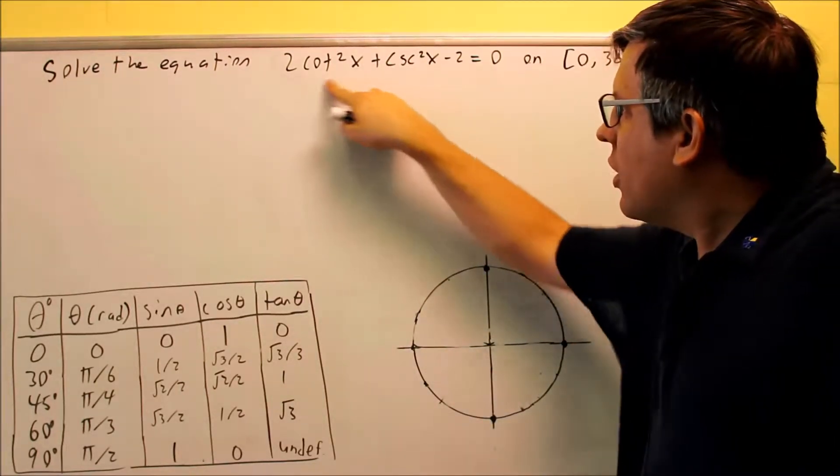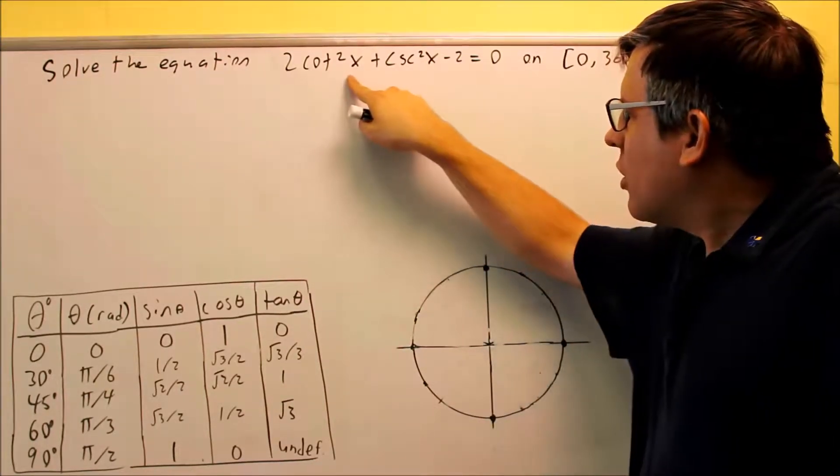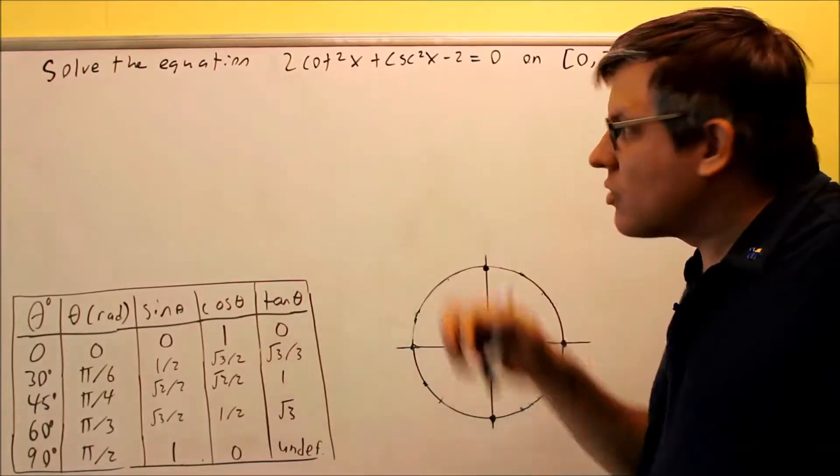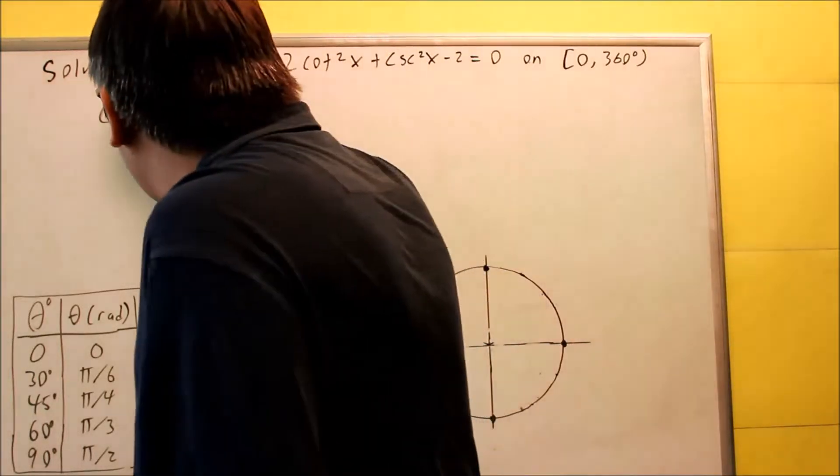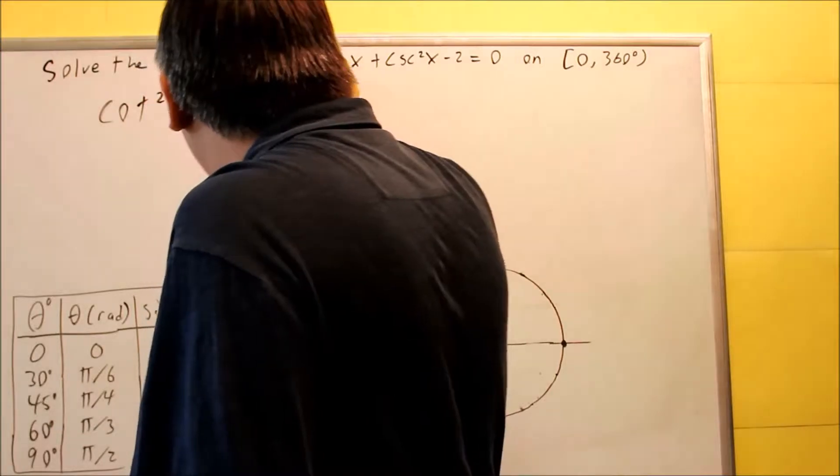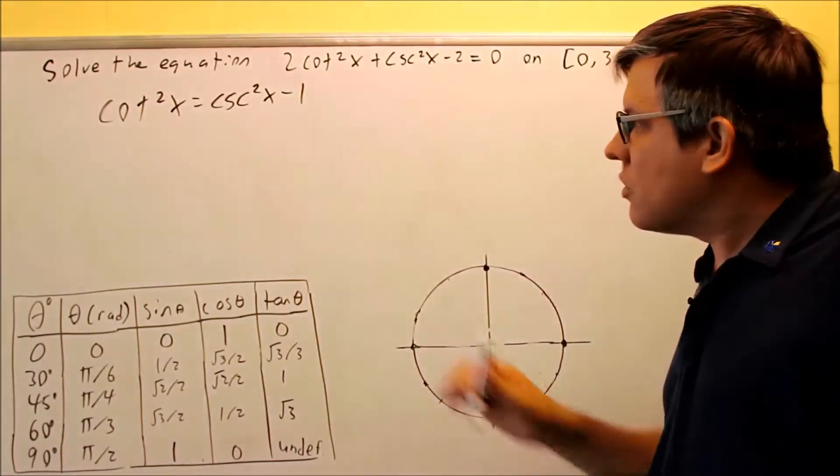In order to do that we need to put in an identity. This is cotangent squared of x. We have to put an identity for that. There's an identity cotangent squared x equals cosecant squared x minus 1. That's the one we're actually going to use here.